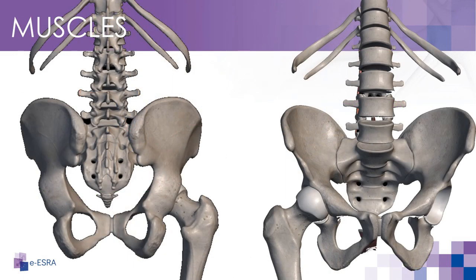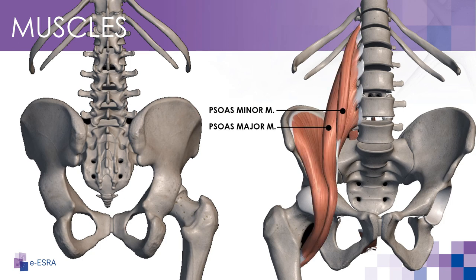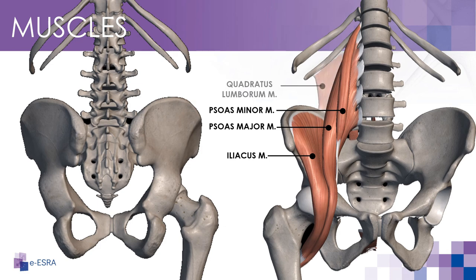Although there are many muscles involved in hip flexion, extension and rotation, from an anesthetic point of view the psoas major and minor, iliacus, quadratus lumborum and quadratus femoris muscles are the ones we should always keep in mind in order to understand and perform the different regional anesthetic techniques.